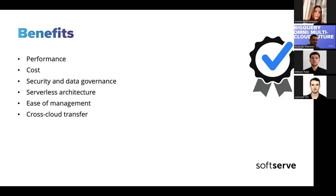For security and data governance, you manage the data in your own AWS or Azure subscription and don't need to move or copy raw data out of your public cloud. All computation happens in the BigQuery multi-tenant service, which runs within the same region as your data. As for the serverless architecture, BigQuery Omni is a serverless offering — Google deploys and manages the clusters that run BigQuery Omni, so you don't need to provision any resources or manage any clusters.